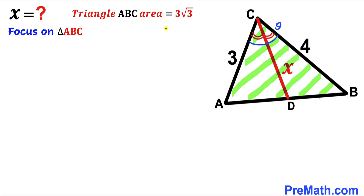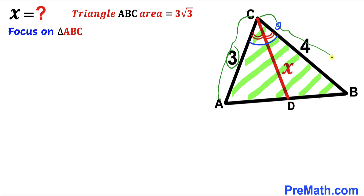We know that the area of triangle ABC has been given to us as 3 times square root of 3 square units, and its two side lengths are 3 and 4 units.